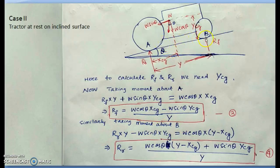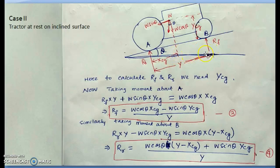Taking moment about B: RR × Y − W·sin(theta)·Y_CG = W·cos(theta)·(Y − X_CG), so RR = [W·cos(theta)·(Y − X_CG) + W·sin(theta)·Y_CG] / Y. Comparing with Case 1, the front wheel reaction is reduced and the rear wheel reaction is increased, confirming weight transfer to the rear on an incline.